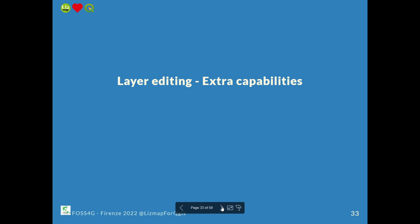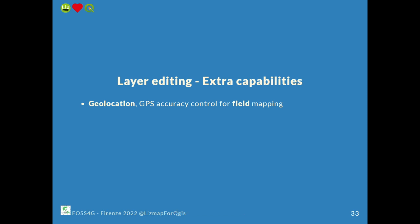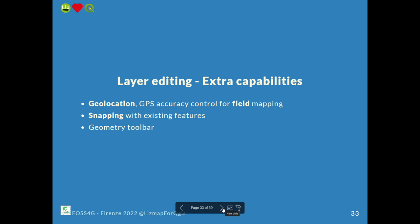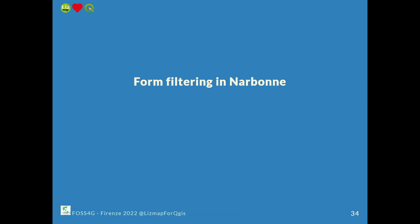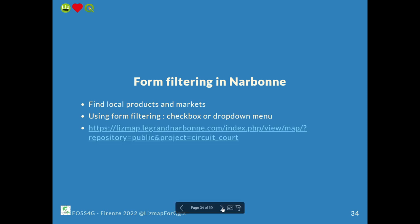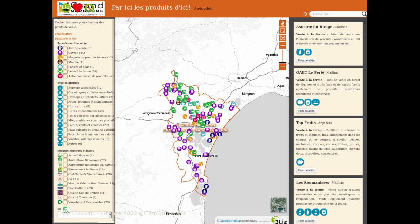We have some extra capabilities in layer editing. Some people use it in the field, so they want to check GPS accuracy by tablet or phone. We have some snapping features, and we can also have a geometry toolbar to reverse the geometry or to split. For form filtering, they use it to find local products and markets — we can generate check boxes or drop-down menus showing unique values, and you can click on them to either display or hide features on the map.